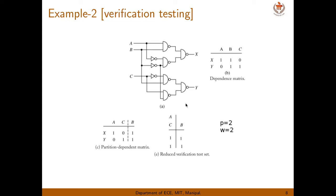In this, you have three inputs A, B, C and two outputs X, Y. So first we will write a dependence matrix. What is the dependence matrix?